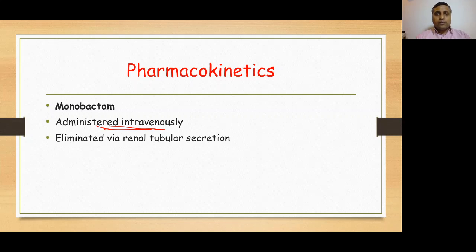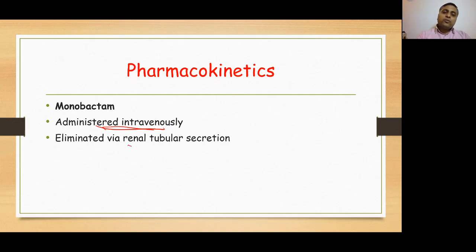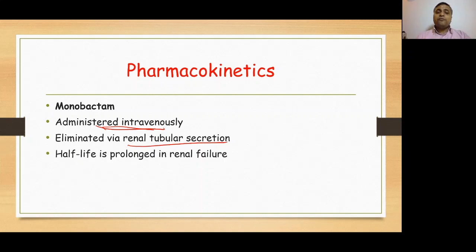In the case of penicillins, all of them were excreted through glomerular filtration or renal tubular secretion, except ampicillin and nafcillin. In the case of cephalosporins, all of them were excreted through renal tubular secretion except cefoperazone and cefotetan. In the case of carbapenems, they were excreted through the urinary route. Here in the case of aztreonam, which is a monobactam, it is once again excreted through renal tubular secretion. Because it is eliminated through renal tubular secretion, in patients with renal failure there are increased chances of half-life prolongation due to accumulation of the drug in the body.